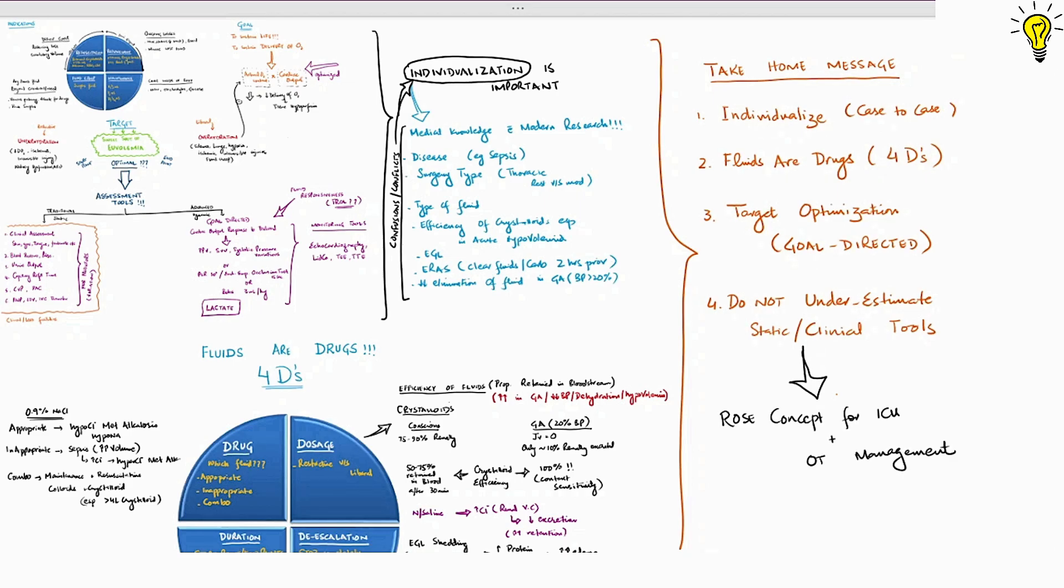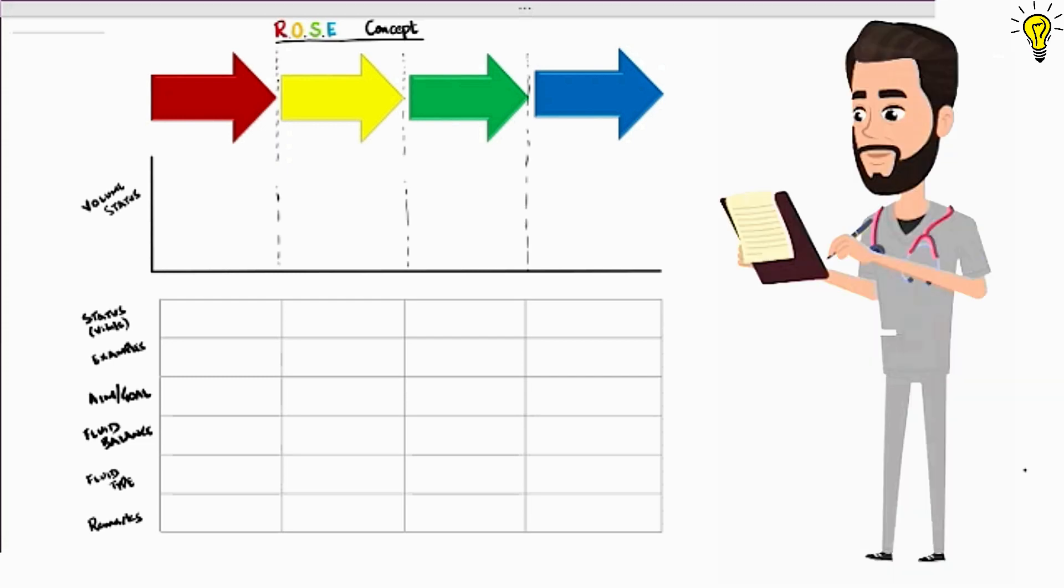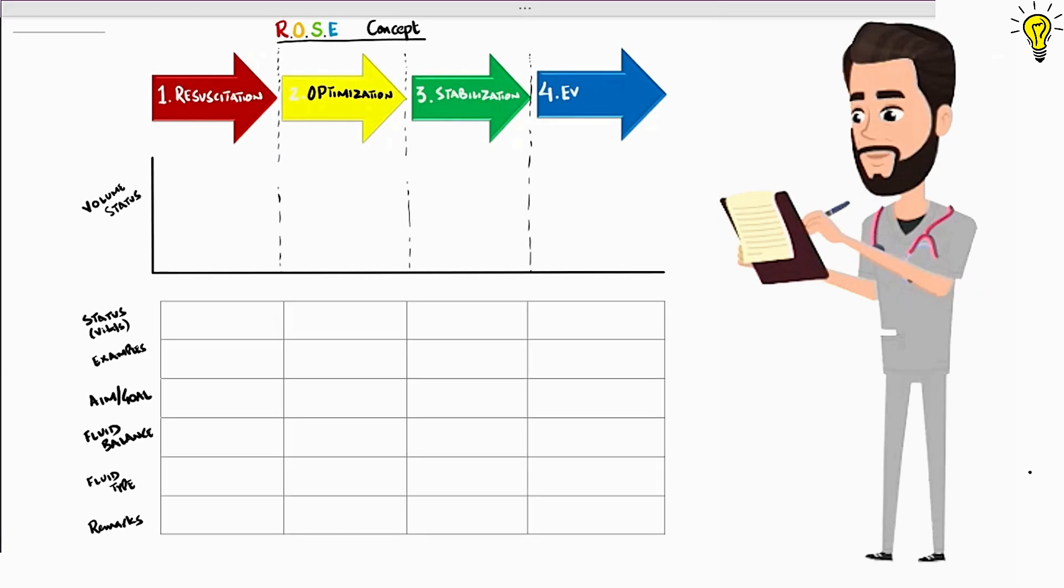Now let's finally see the ROSE's conceptual model for fluid management. The ROSE's conceptual model was coined by International Fluid Academy and I personally love it. So ROSE is an acronym: R for resuscitation, O for optimization, S for stabilization and E for evacuation.